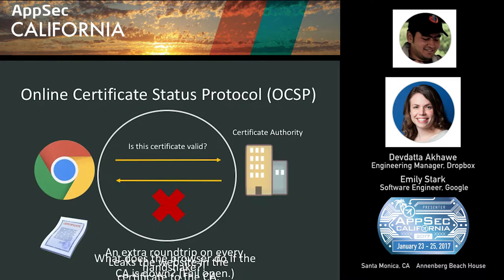An alternative that occurred to some people is the Online Certificate Status Protocol, or OCSP. Instead of downloading a whole bunch of revoked certificates, the browser does an online check for the particular certificate it's interested in. When the browser has a certificate it's trying to validate, it can ask the certificate authority: is this particular certificate valid? The CA gives an answer for that specific certificate, so the browser doesn't have to download information about certificates it doesn't care about.